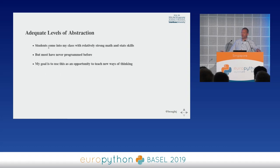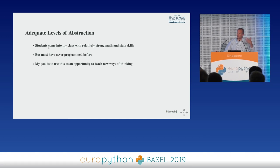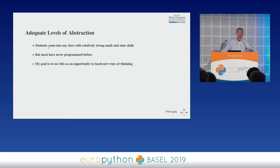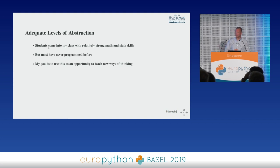One of the questions becomes what is the adequate level of abstraction to think about options and option pricing, which is one of the topics in the computational finance course. By and large, the students come in with pretty strong math and statistics skills, but most have never done any programming. My job for the first third of the course is to teach them to program — it's a challenge, but also an opportunity to help them learn to think in a new way that will augment their mathematical and statistical thinking.